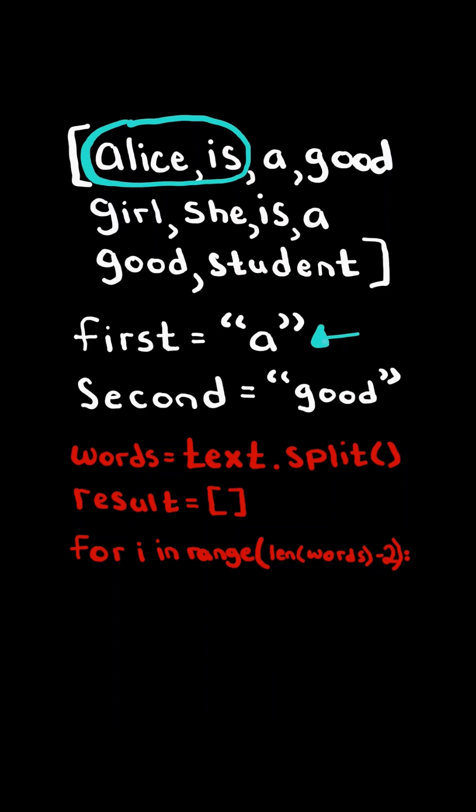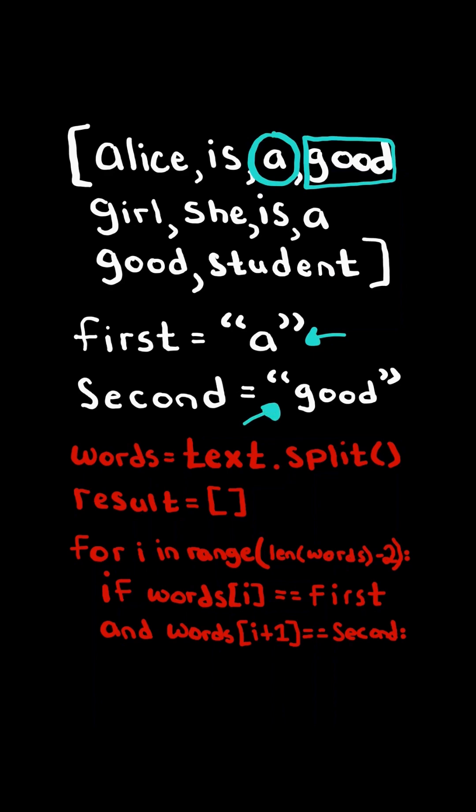If the word does not equal first, we skip it. Now if the word equals first, and we check the next word and if it equals second, we append the following third word to result, and we continue to the next word.